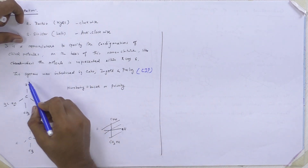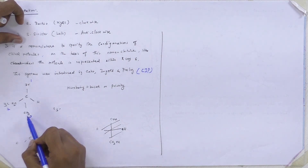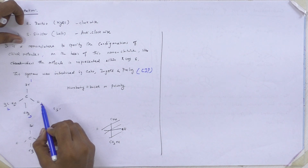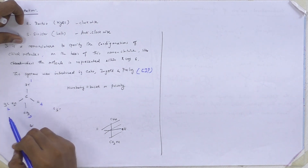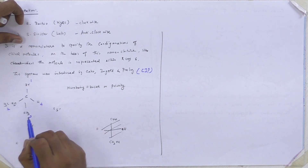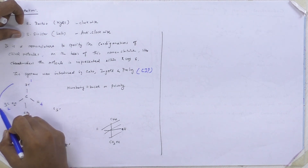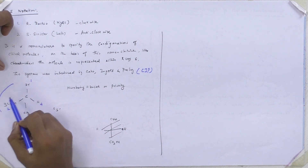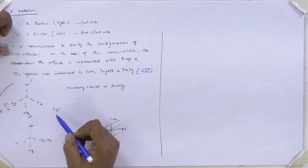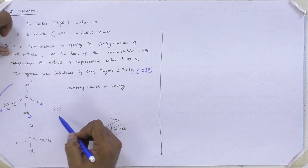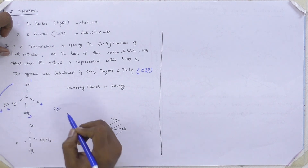So here, bromine is highest priority. Next is ethyl, the third one is methyl, and finally hydrogen. Because bromine has the highest atomic number, then C2 ethyl, followed by methyl and hydrogen. Now the numbering will be like this, and the order will go in this direction — anti-clockwise direction. So we assign it S configuration.